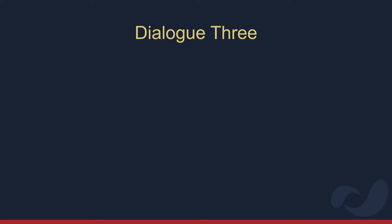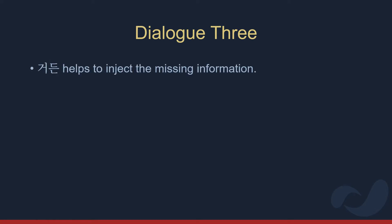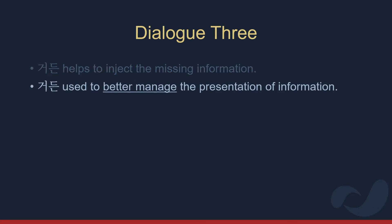Here the speaker states the reason why they commuted from home during first year. 거든 is often used when giving reasons like this, and notice that there aren't any issues in the flow of information. So then why does the speaker use 거든? 거든 is used to manage the presentation of information. There doesn't need to be a difficulty for it to be used. The next dialogue shows how 거든 can be used when disagreeing with someone.